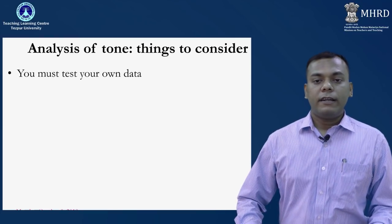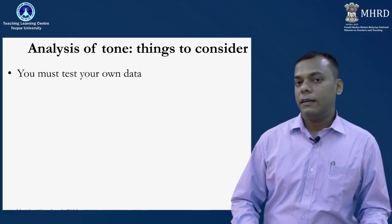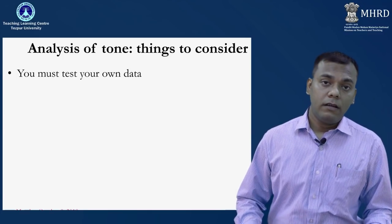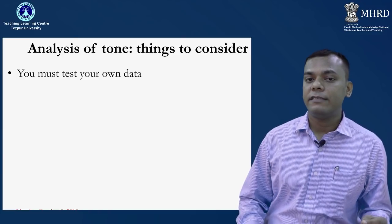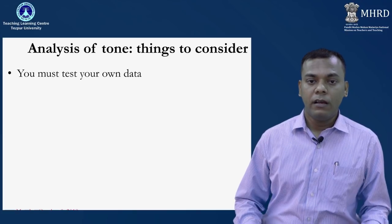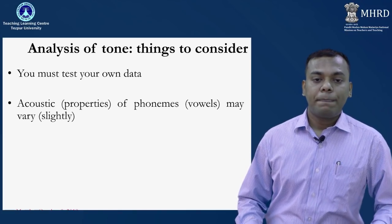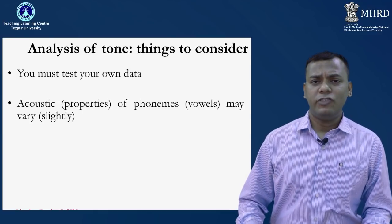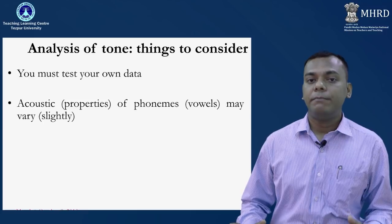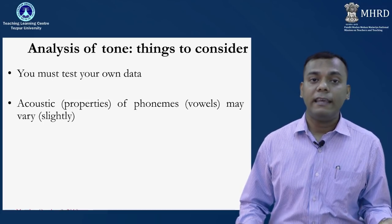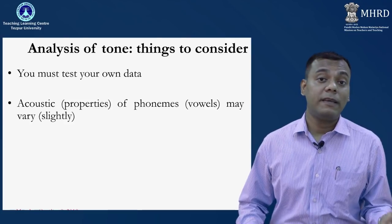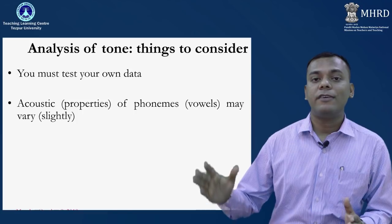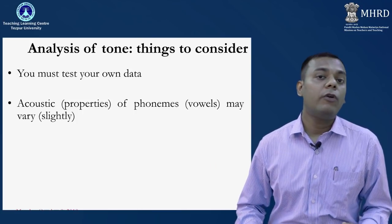When you start analyzing tone, what are the things you need to consider? You must test your own data. There might be some descriptive studies that mention the presence or absence of tone in a given language, but you need to check your own data. You need to check the acoustic properties of phonemes, especially the vowels, which may vary slightly. Generally tone is located in the vowel or the rhyme portions. There are languages where consonants may carry tone, but in most cases it is the vowel or the voiced portion — the rhyme, meaning vowel plus any sonorous coda — that gives you the clue about F0 distinction.